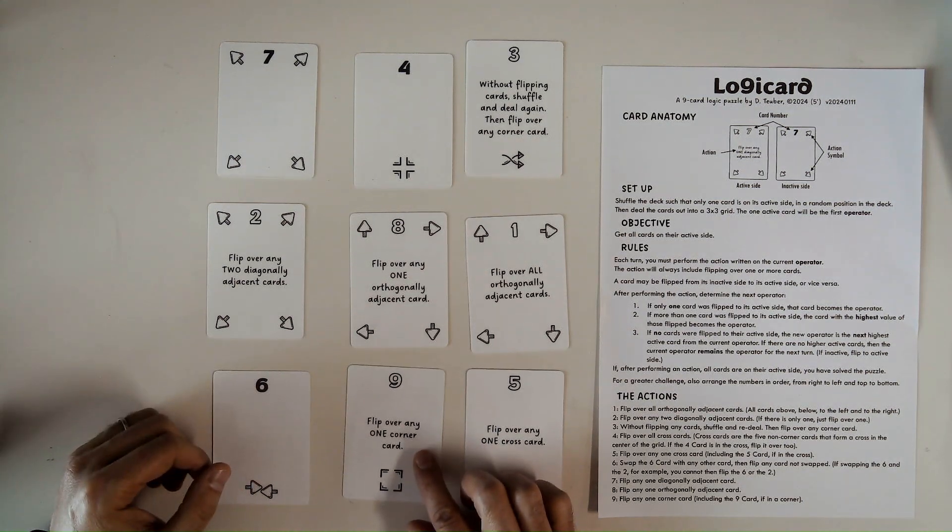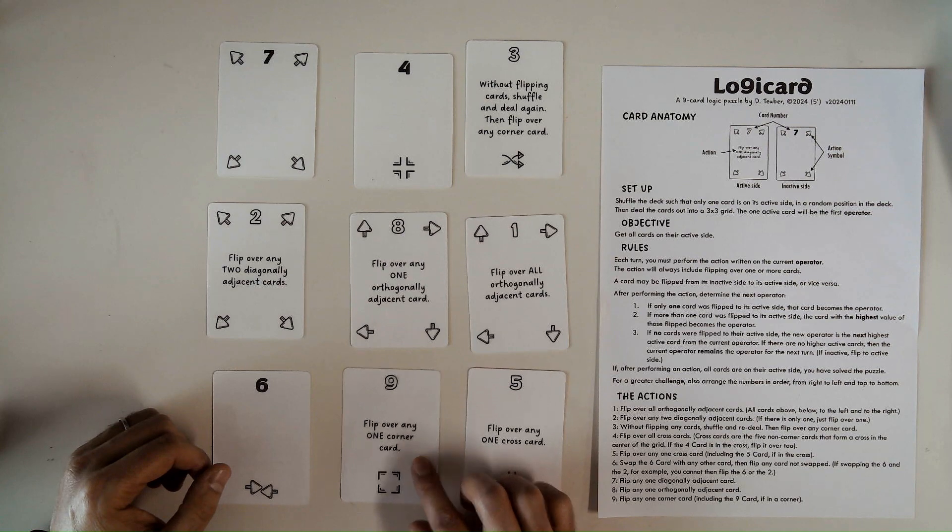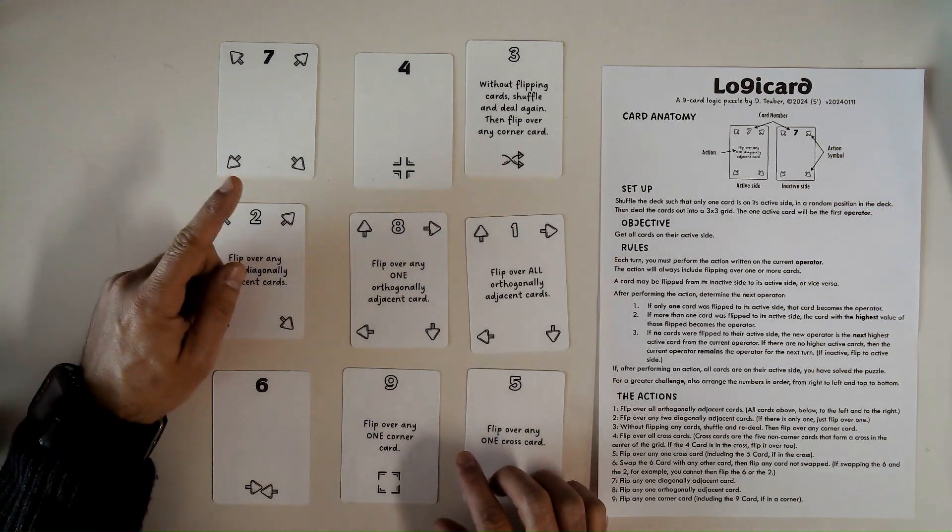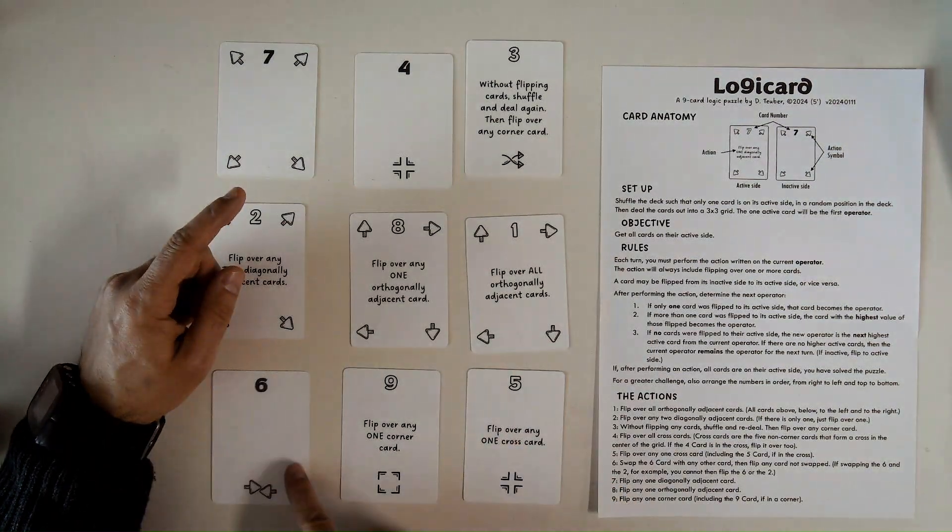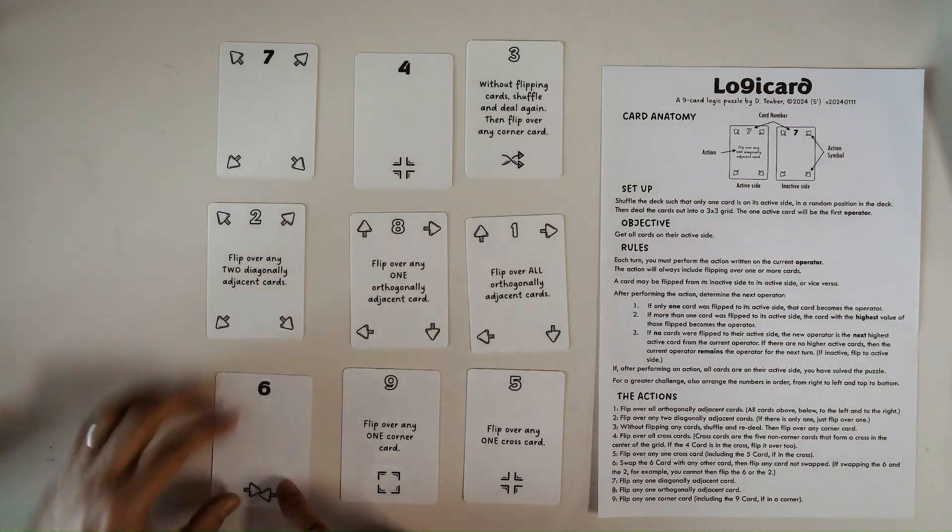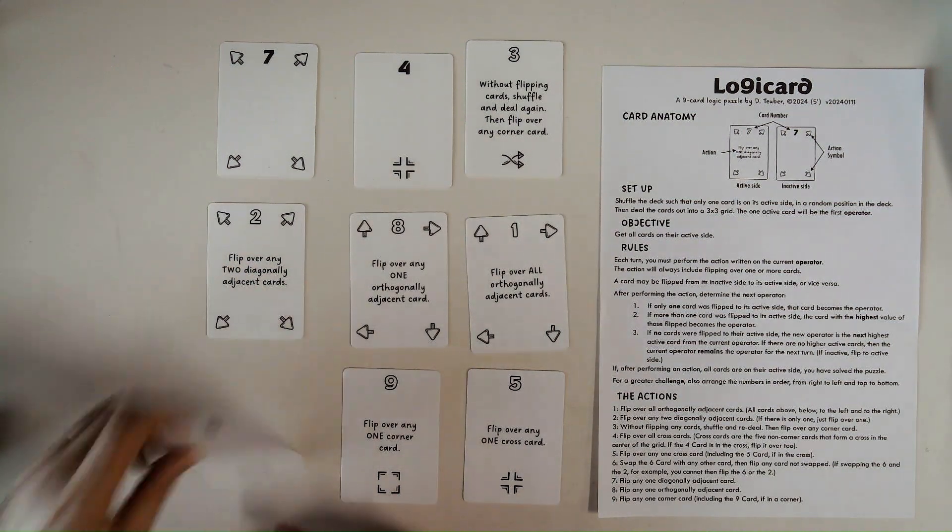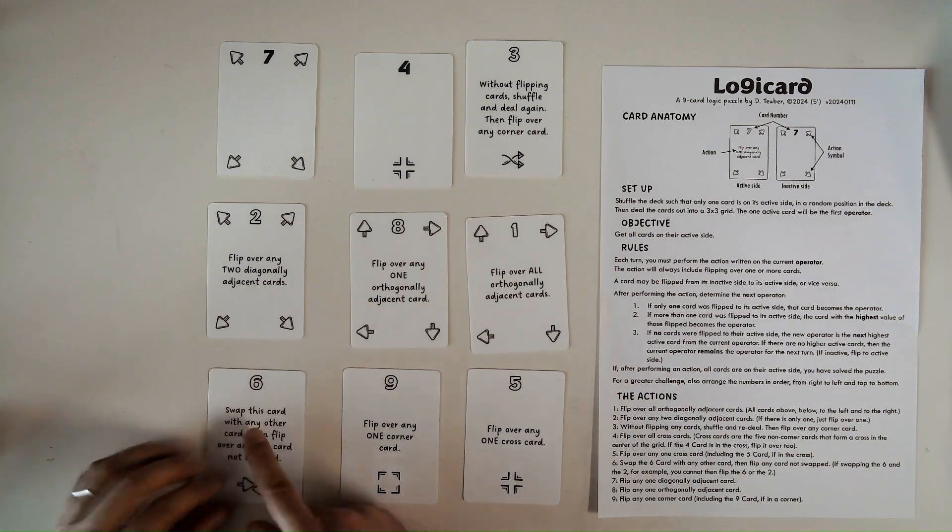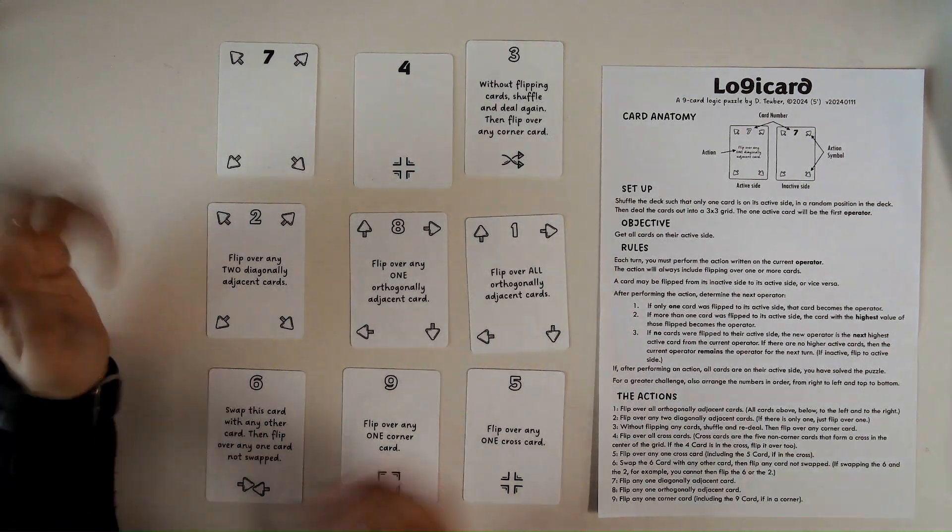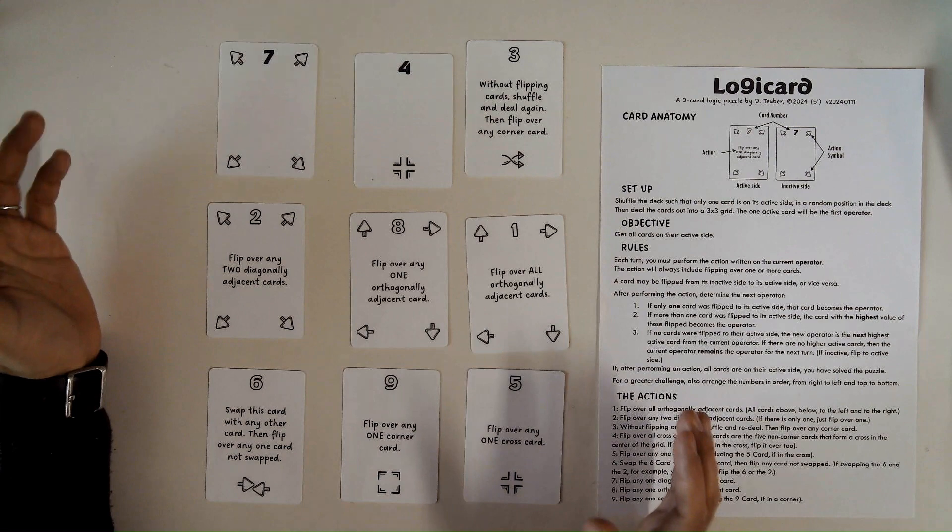This says to flip over any corner card. I can flip over the 7, the 3, the 5, or the 6. Well, let's look at the 6. The 6 is an interesting card. The 6 says to swap this card with any other card and then flip over any one card that's not been swapped.